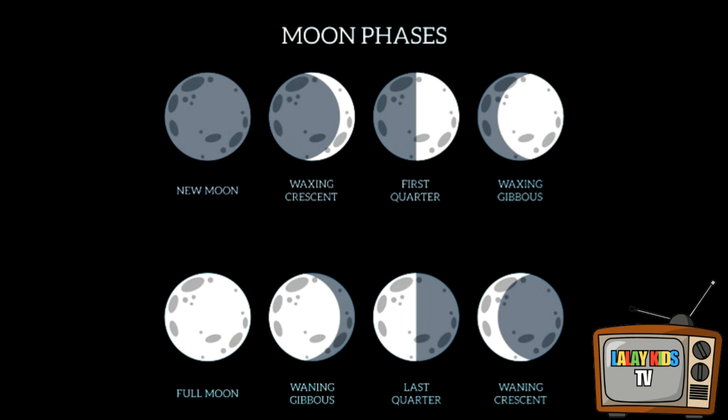These phases result from the moon's position relative to Earth and the Sun. Let's have a look at the primary phases. New moon: the moon is not visible, as it is positioned between Earth and the Sun. Waxing crescent: a tiny, crescent-shaped sliver of the moon becomes visible in the western sky after sunset. First quarter: the moon is half-illuminated and visible in the evening.